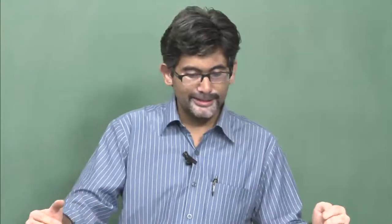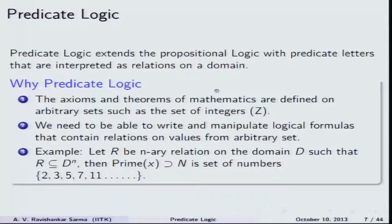If we are talking about arithmetic, the domain could be natural numbers; if we are talking about some Indians, the domain could be all people residing in India. The same thing that is true of natural numbers cannot be true of all domains, such as a domain containing only integers. The axioms and theorems of mathematics are defined on arbitrary sets such as sets of integers, where we always invoke some kind of relationship between statements.